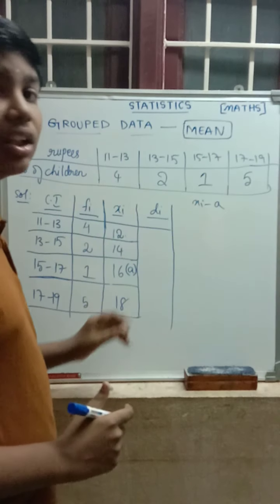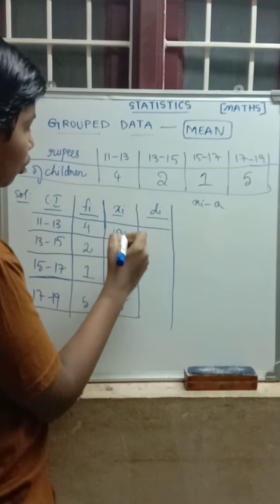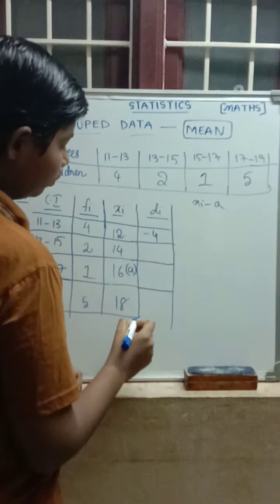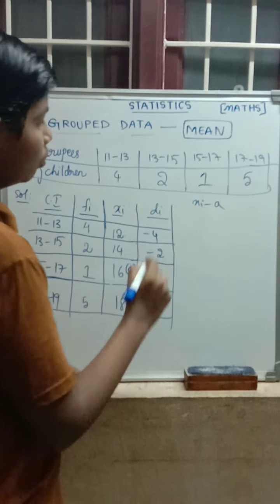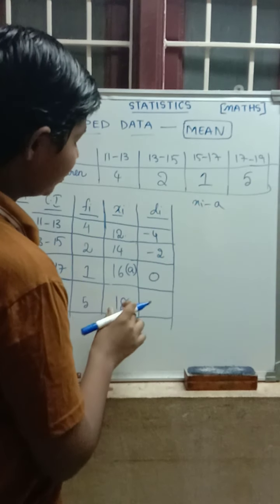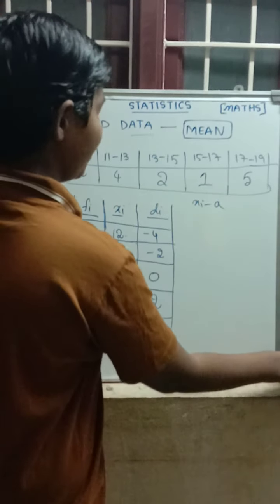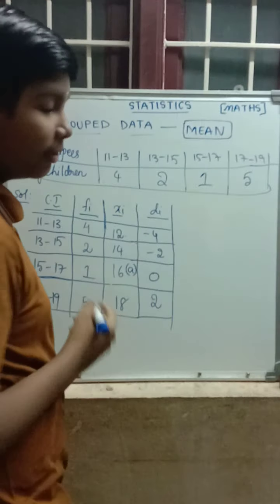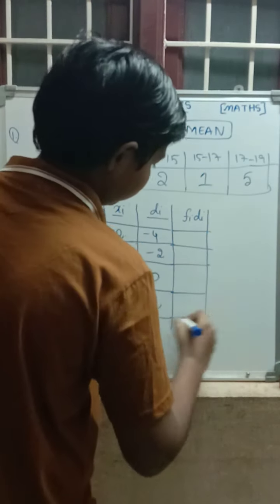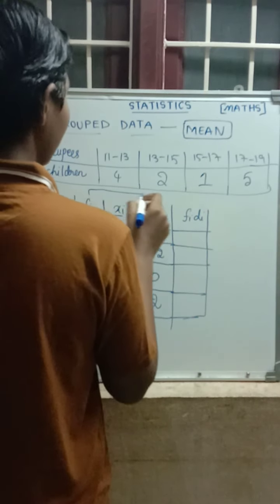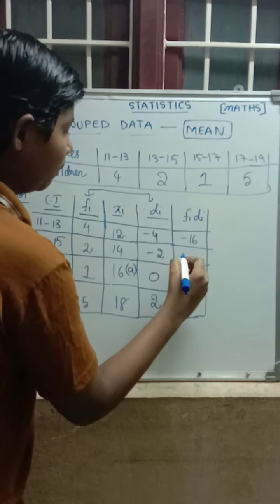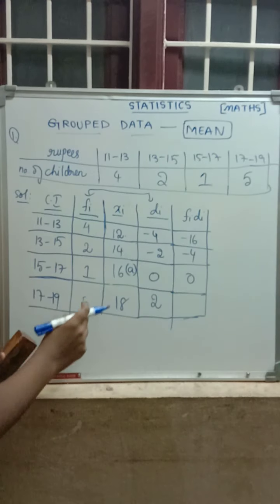Calculating Di = Xi minus A, where A = 16: 12 minus 16 = minus 4; 14 minus 16 = minus 2; 16 minus 16 = 0; 18 minus 16 = plus 2. Now we calculate Fi·Di: 4 × (−4) = −16; 2 × (−2) = −4; 1 × 0 = 0; 5 × 2 = 10.